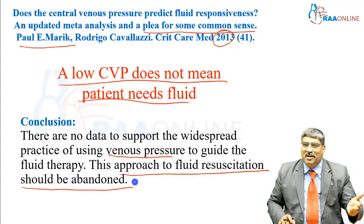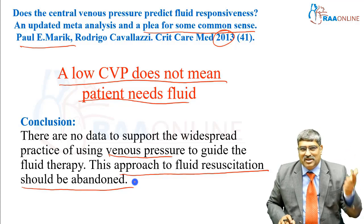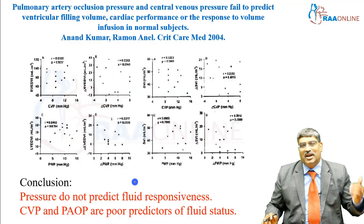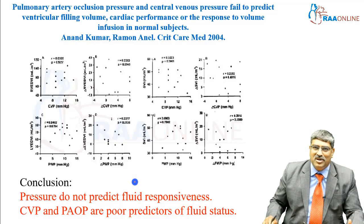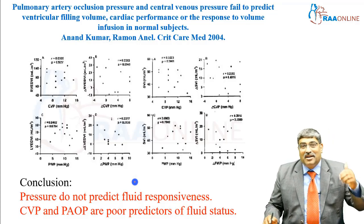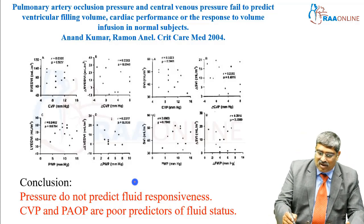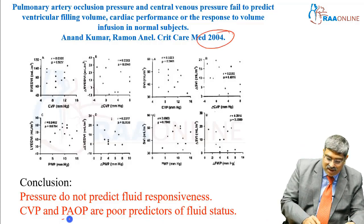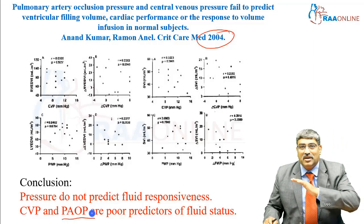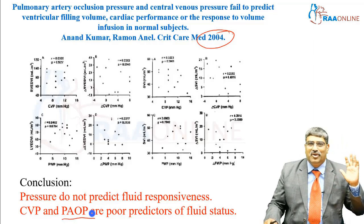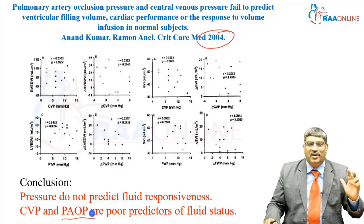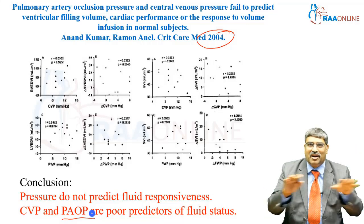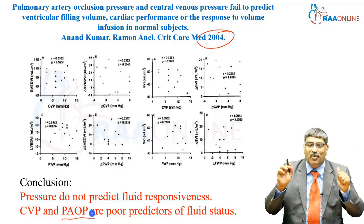So mean arterial pressure cannot be used for volume, and central venous pressure cannot be used for volume. What is remaining? Only your pulmonary artery occlusion pressure. But a study by Kumaran et al. back in 2004 showed that pulmonary artery occlusion pressure also does not predict your fluid status. So mean arterial pressure, CVP, and pulmonary artery occlusion pressure — none of the pressures predict the volume.